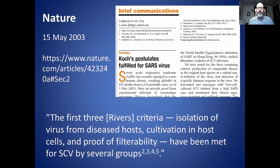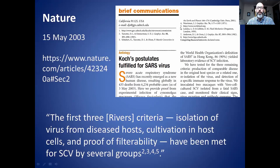Getting back to this Nature article: it states that the first three Rivers criteria — isolation of the virus from a diseased host, cultivation in host cells, and proof of filterability — have been met for the SARS coronavirus by several groups, with footnotes referencing papers two through five. I'm going to go through all those references, which I've listed on each slide. Before doing that, I want to go over the definition of 'isolate,' because I think this has been confused by some scientists. From the Merriam-Webster Collegiate Dictionary: 'to separate from another substance so as to obtain in pure or free state' — in other words, nothing else is mixed with it.